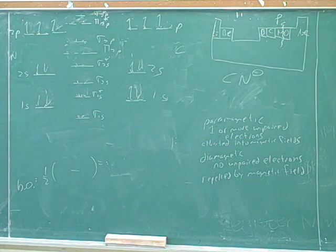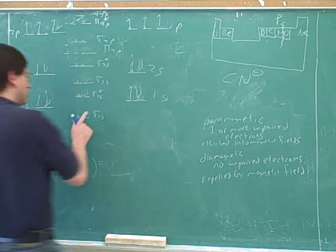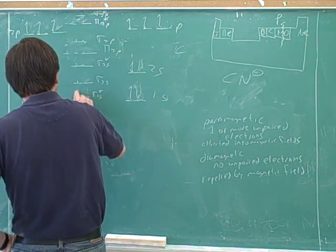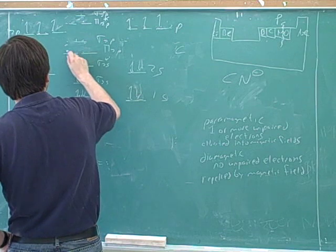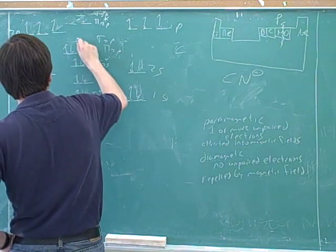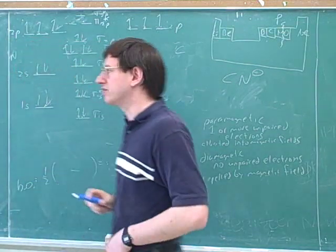What's our total number of electrons here? Fourteen. One, two, three, four, five, six, seven, eight, nine, ten, eleven, twelve, thirteen, fourteen. Okay.